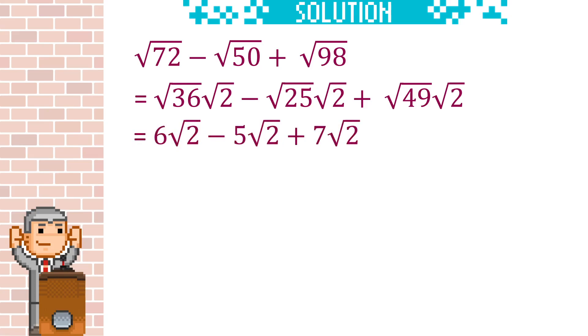Surds are very similar to algebra in the sense that you can collect like terms, or collect like surds, similar to what we do with X's. So you imagine if it was 6X minus 5X plus 7X, you would know that the answer would be 8X. Here, it's going to be 8 root 2, because it's 6 lots of root 2, take away 5 lots of root 2, so that leaves 1 lot of root 2, plus 7 lots of root 2, which will give us the 8 root 2.